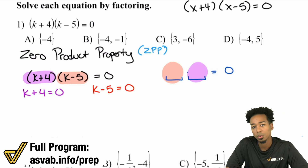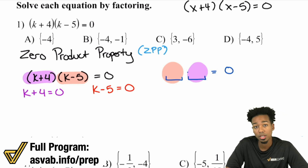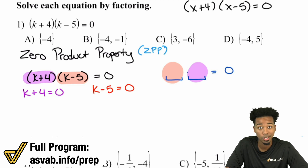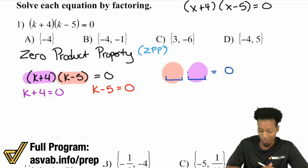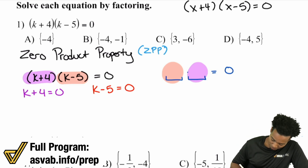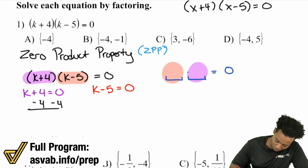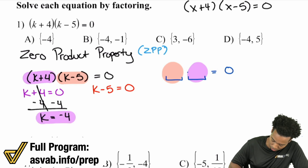The reason that this works is because once we solve it and plug it back in, you'll see that it works. Anything times zero equals zero. So all we have to do is make that parentheses zero and we have our answer. Watch this. K plus four equals zero. We solve this by subtracting four on both sides — it cancels out — and k equals negative four. That's one of the solutions.